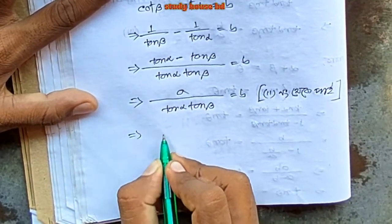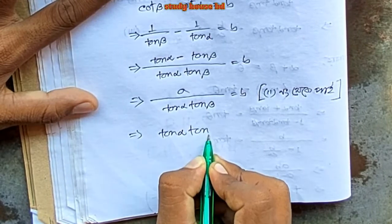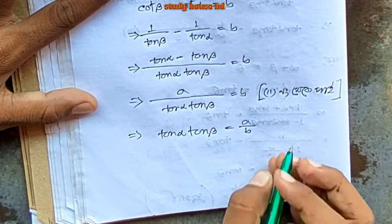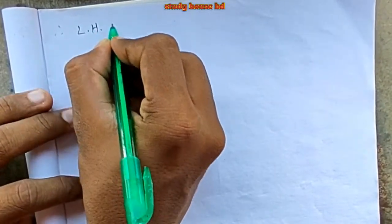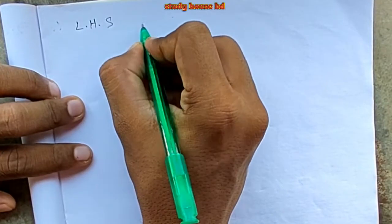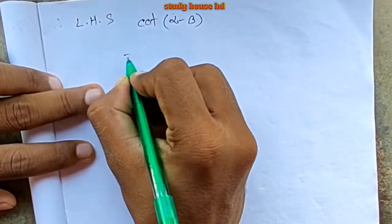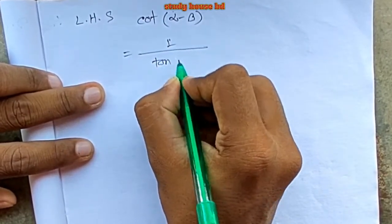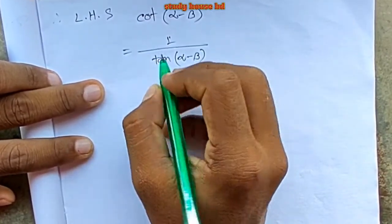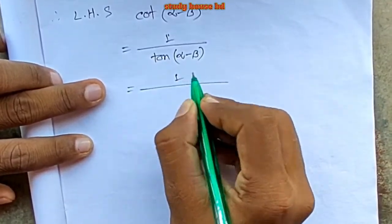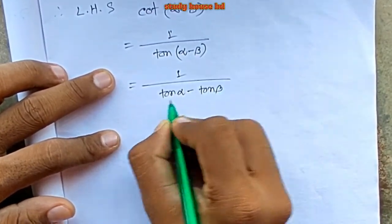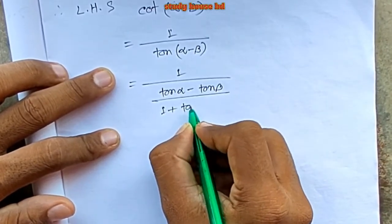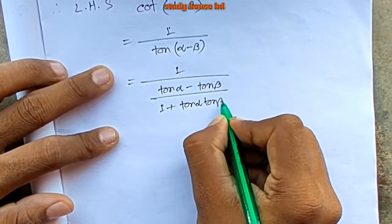Tan alpha tan beta equals a by b. Let's take left hand side. One by tan(alpha - beta). So 1 plus tan alpha tan beta over tan alpha minus tan beta.